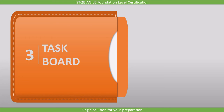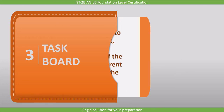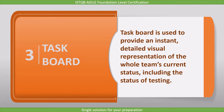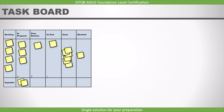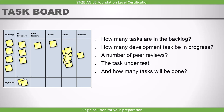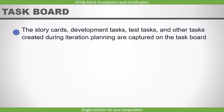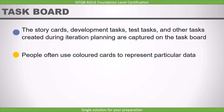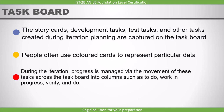The last communication method is the task board. A task board is used to provide an instant detailed visual representation of the whole team's current status, including the status of testing. This example of a task board shows the status of all tasks at once: how many tasks are in the backlog, how many development tasks are in progress, the number of peer reviews, tasks under test, and how many tasks are done. Story cards, development tasks, test tasks, and other tasks created during iteration planning are captured on the task board. People often use colored cards to represent particular data. During the iteration, progress is managed via the movement of these tasks across columns such as to do, work in progress, verify, and done.